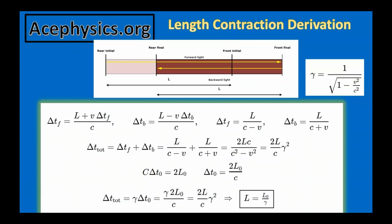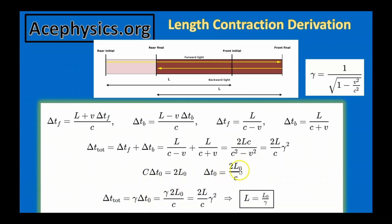We already know from the light clock argument that time runs slower for a moving observer — derived in the previous video. ΔT₀ is the proper time and L₀ is the proper length, as measured by someone riding on the train. The speed of light times the proper time equals 2L₀, so the proper time is 2L₀/c. From time dilation, the total time measured on the ground equals γ times the proper time. We've shown the total ground time also equals 2L/c · γ². Setting these two expressions equal and simplifying leads directly to the length contraction formula: the length of the moving train as measured from the ground is shorter than the proper length measured on board.